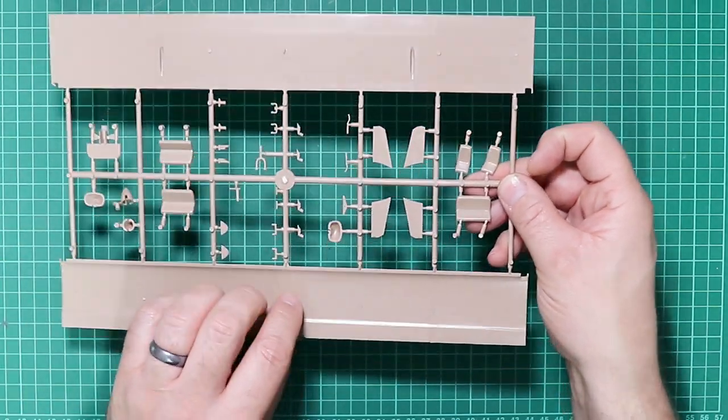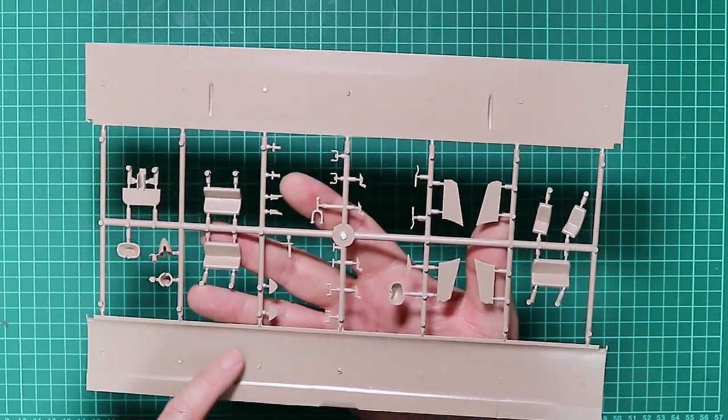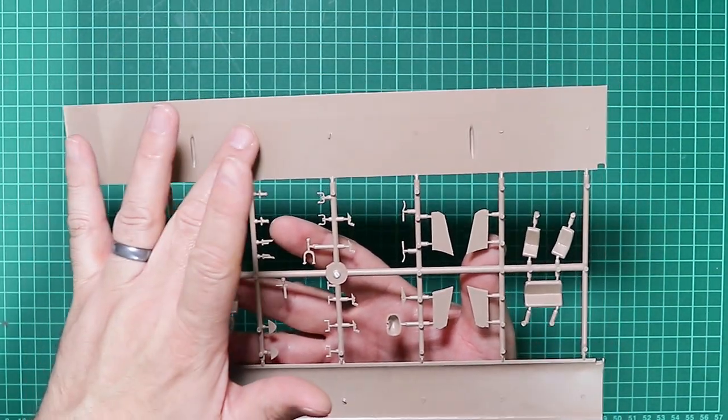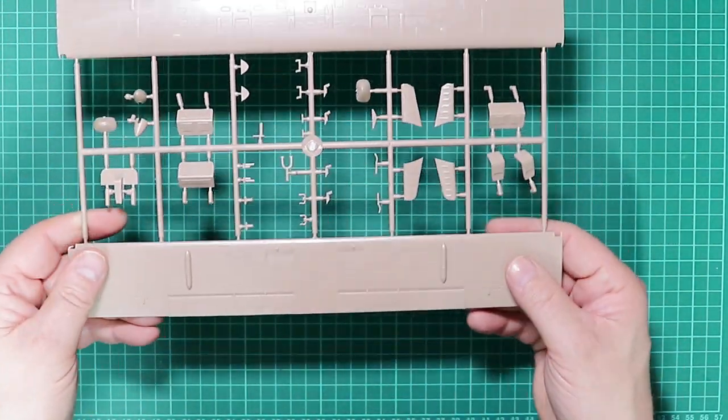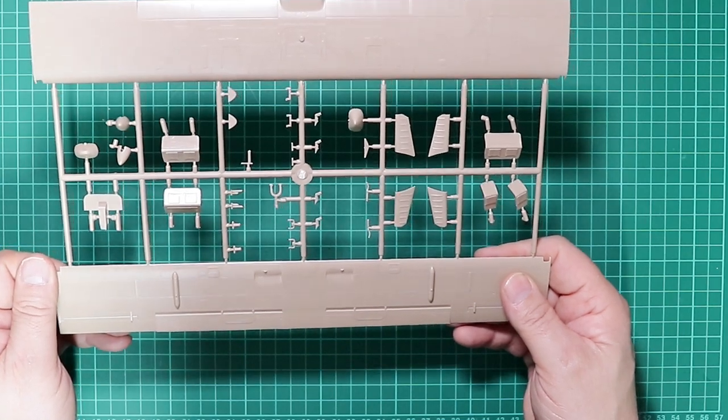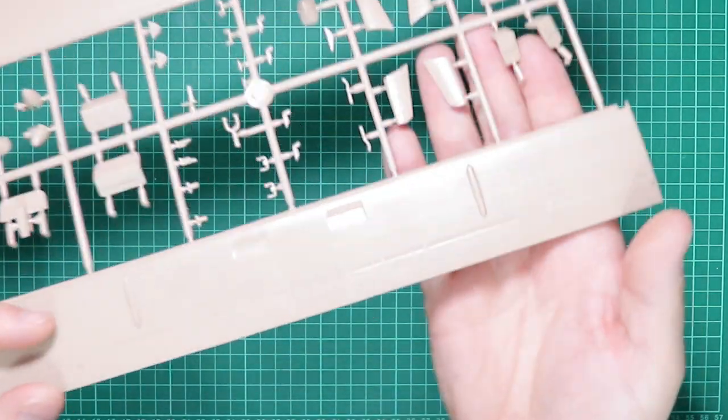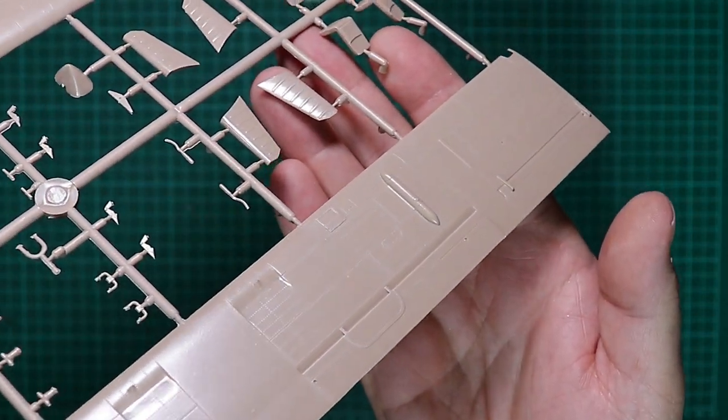There's a few pin marks that are going to perhaps just need a little bit of investigation as to whether they're going to interfere with the fit of the wings together, but they're easy enough to just sand out. Then we've got this, I think this is the lower section of the wing, which is again quite nicely rendered. Some nice rivet detail on there if the camera can pick that up.